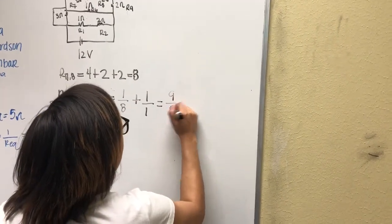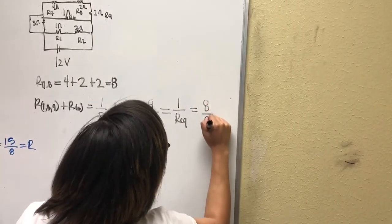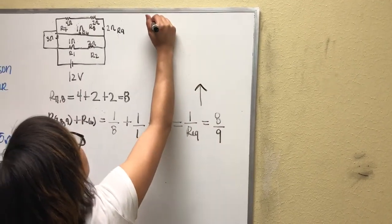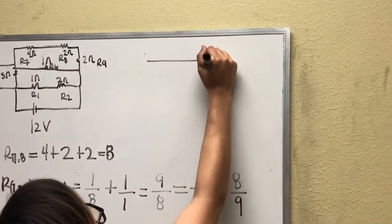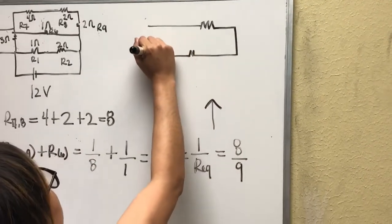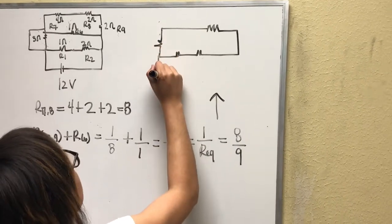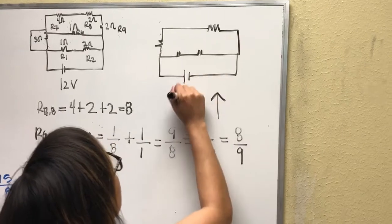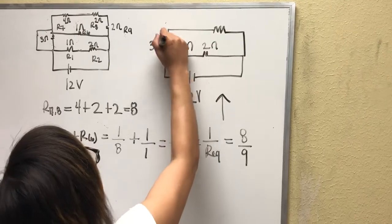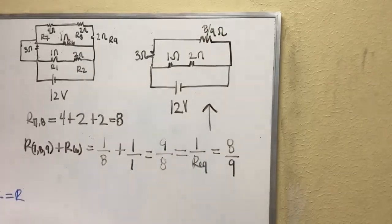Yeah, 9 over 8, which will give you 1 over R E Q, which will give you 8 over 9 for this series. So then with this, it simplifies to... And now I'll pass the marker.